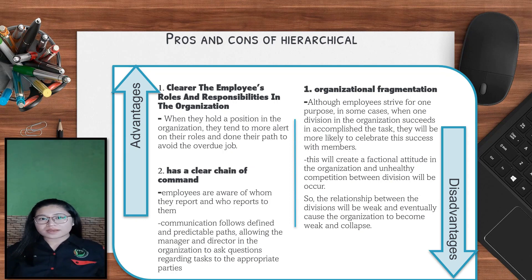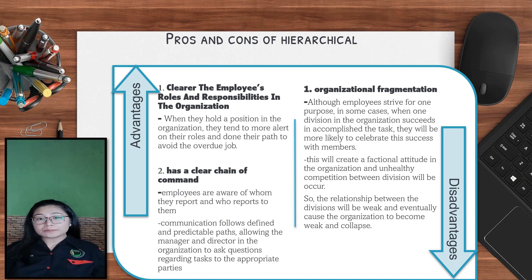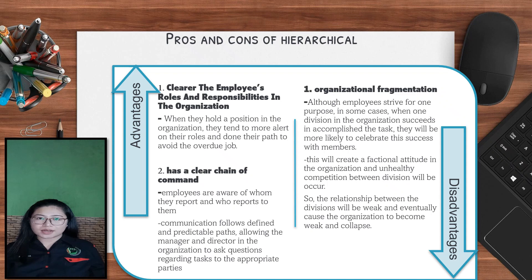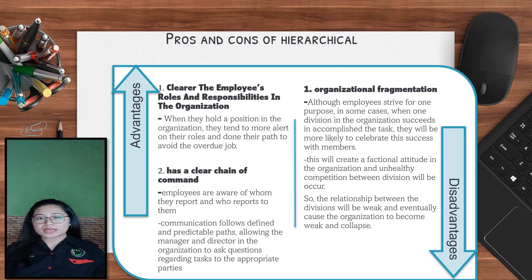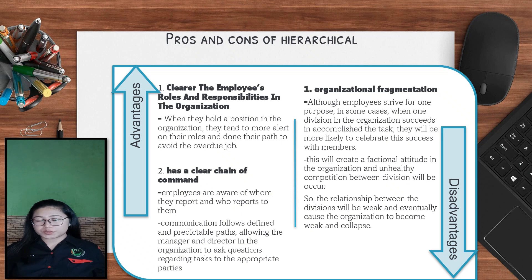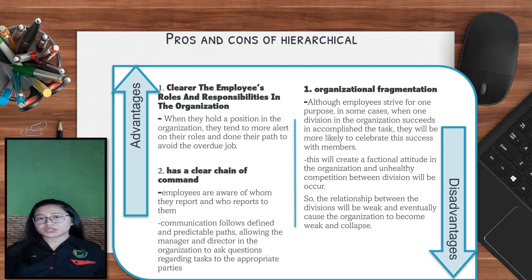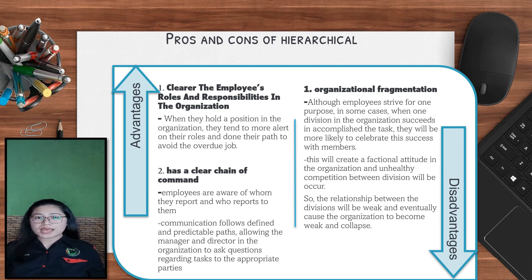Meanwhile, a con of the hierarchical type is that organisational fragmentation can occur. Although employees strive for one purpose, in some cases when one division successfully accomplishes a task, they may celebrate the success only among their own members. This can create a siloed attitude and unhealthy competition between divisions, weakening relationships between divisions and eventually causing the organisation to become weak.